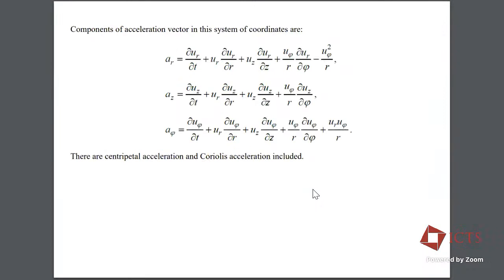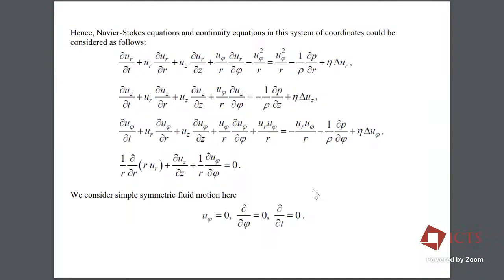Now we will represent the acceleration vector in different directions, which gives us the whole picture of the acceleration vector field and the displacement vector field. We include here centripetal acceleration and Coriolis acceleration. Now we can represent the Navier-Stokes equations — the first and continuity equations — in a cylindrical system of coordinates in the following form.